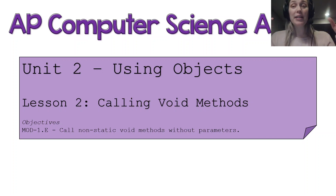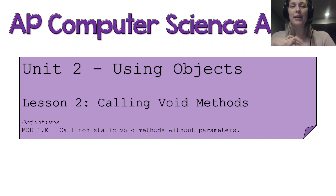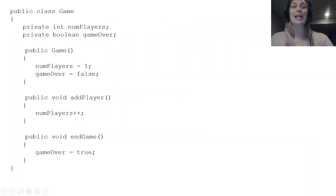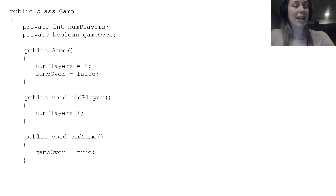We've already seen this a little bit in lesson 1, but today I'm going to give you a few more examples of how we can call void methods and what they look like. So we're going to jump right in with an example and go through what this class is representing.